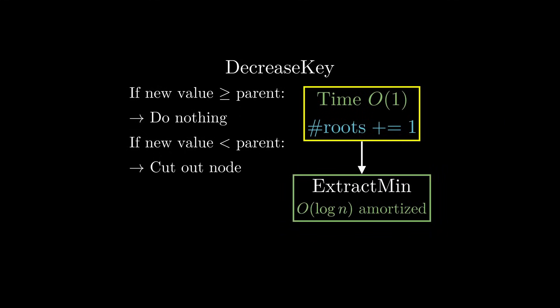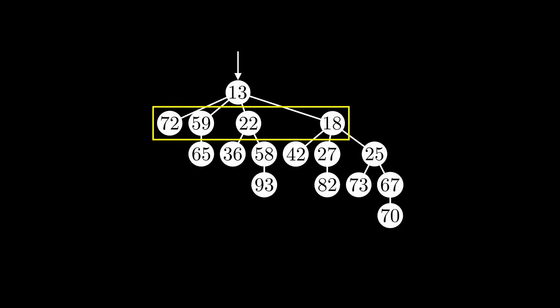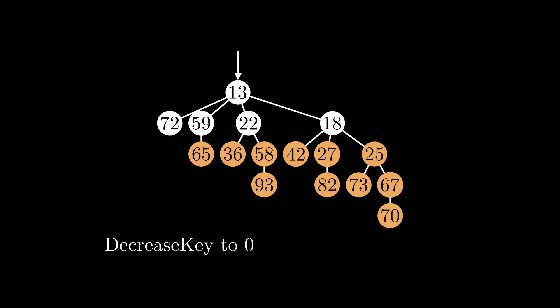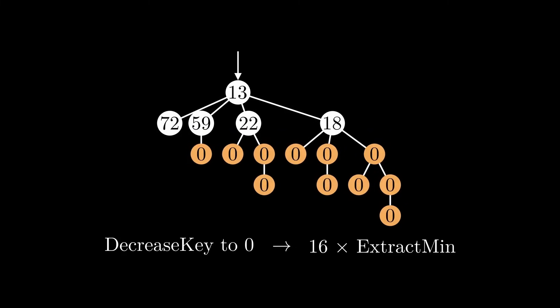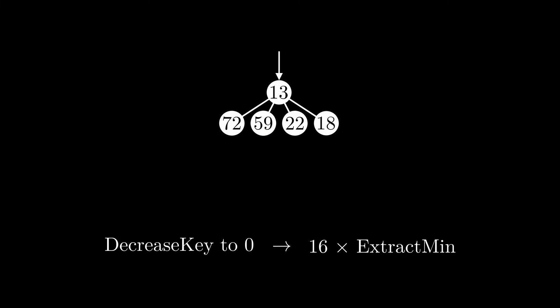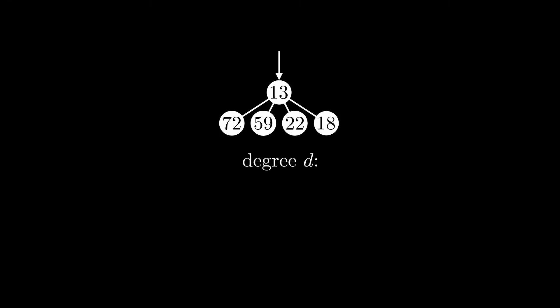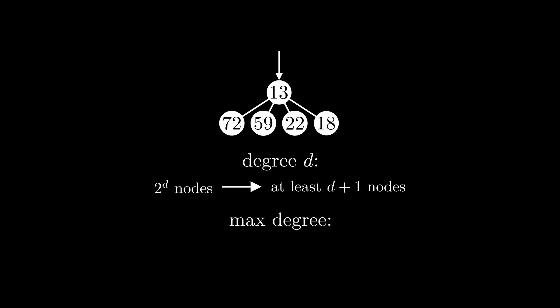Actually, there is a pretty big problem with our implementation. The running time of ExtractMin relies on node degrees only growing logarithmically, but they only grow logarithmically because all trees are binomial trees. If we allow DecreaseKey to arbitrarily cut out nodes, our trees are not binomial trees any longer. Look at this heap: the tree has degree 4 and therefore contains 16 nodes. But if we cut out several nodes by decreasing all their keys to zero and removing them via ExtractMin, the tree still has degree 4 but only contains 5 nodes. While without DecreaseKey a tree with degree d always contains exactly 2^d nodes, now it could be as few as d+1. This means the maximum node degree no longer grows logarithmically but linearly, completely destroying our ExtractMin running time.